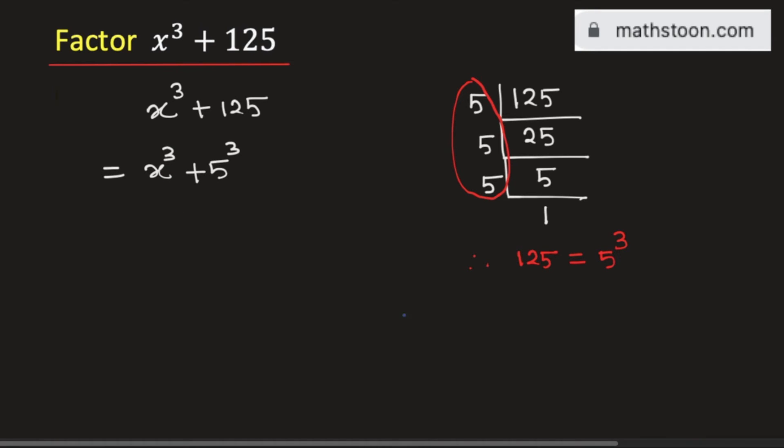See that it is in the form of a cube plus b cube. So we will apply the formula of a cube plus b cube, which is a plus b times a square minus a b plus b square.